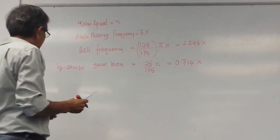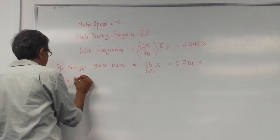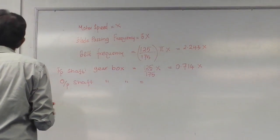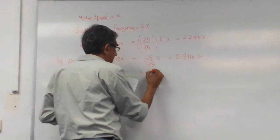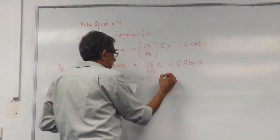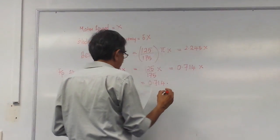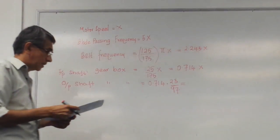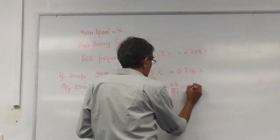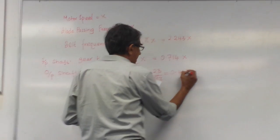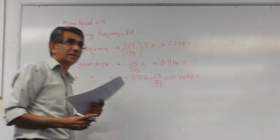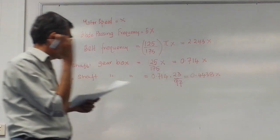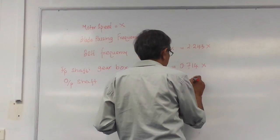Then after that, the output shaft of the gearbox. Gearbox is equal to — there's a gear ratio. It is 0.714 times 97.23 divided by 97. That is the gear ratio. It comes at 0.4438 — something like 4.4 something? More than that — 0.169.